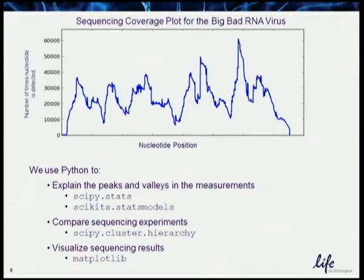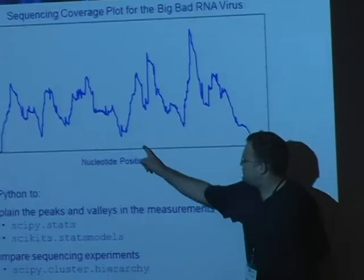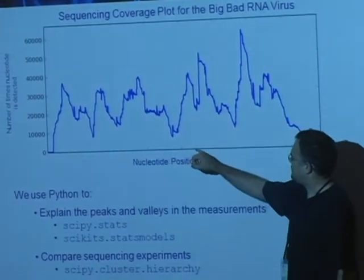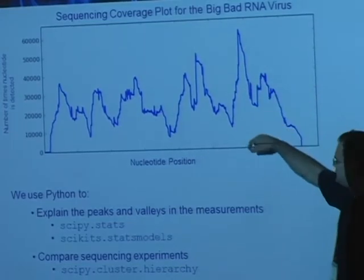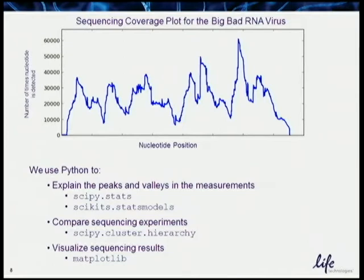What we use Python for in sequencing is to explain why there are peaks and valleys — an ideal sequencing experiment would be uniform. We do correlation studies with statsmodels to ask what properties of a given region make it lowly or highly covered. We even use time series methods like Granger causality to compare a motif in the RNA sequence versus the output. We also use cluster.hierarchy when we have tens or hundreds of runs and want to see how they cluster, and of course we use matplotlib for plotting.